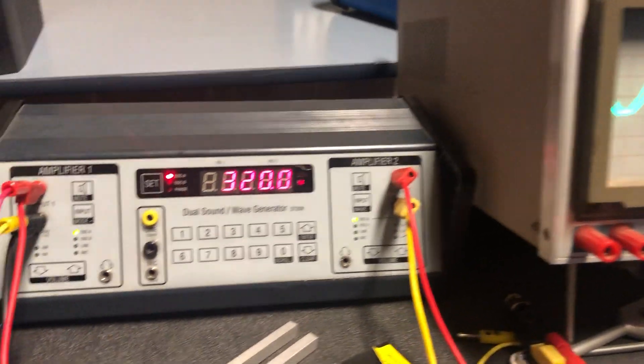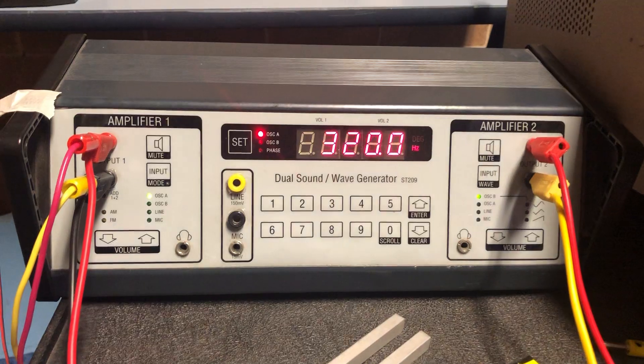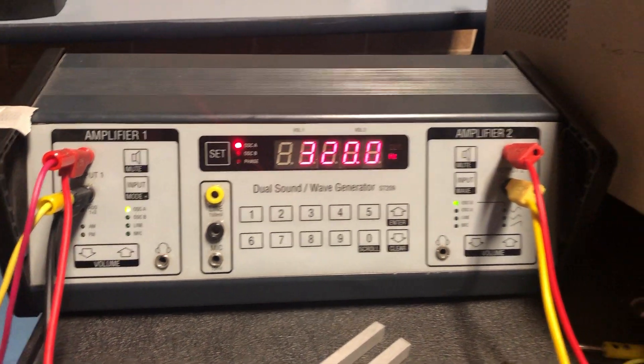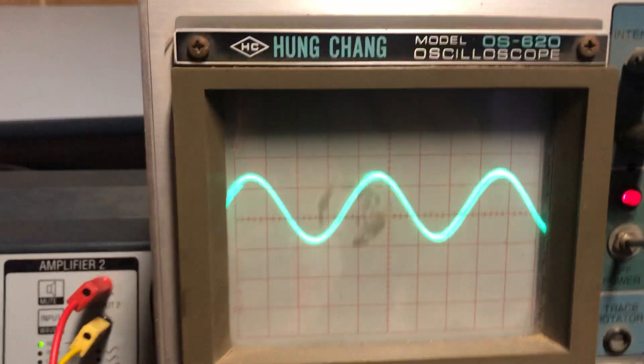Okay, so we just have the Wavelab generator generating a wave of 320 Hz and this is what it looks like on the screen of the oscilloscope.